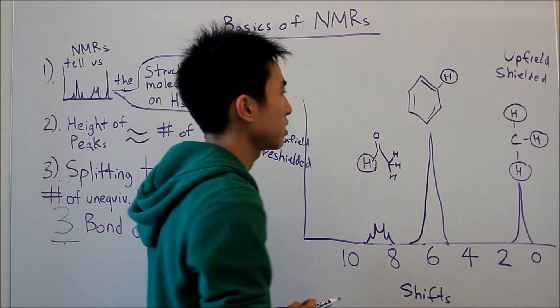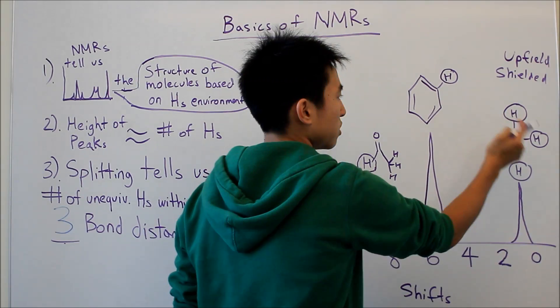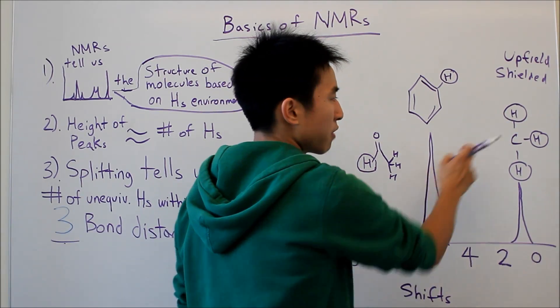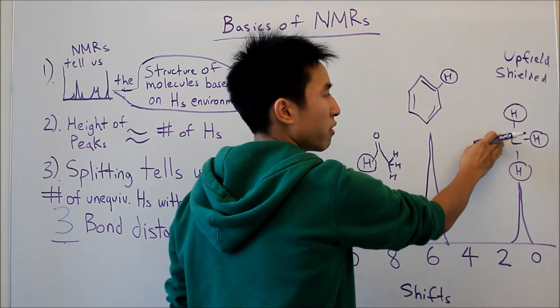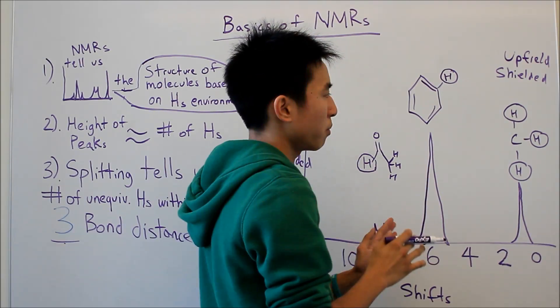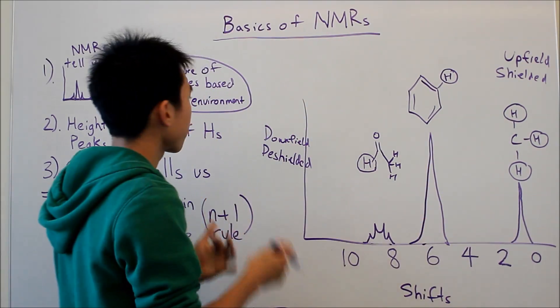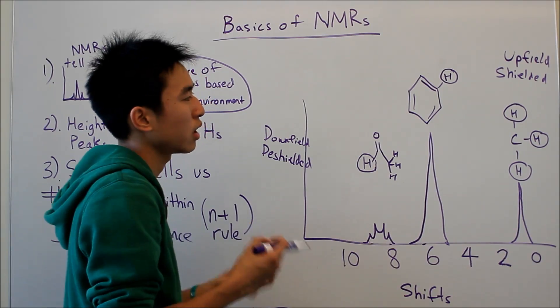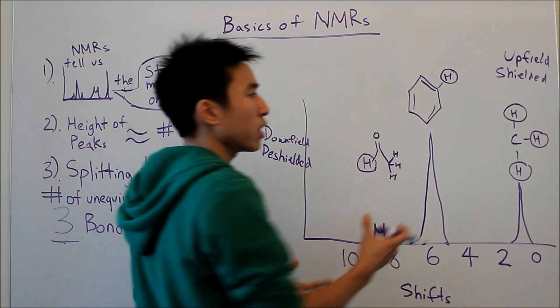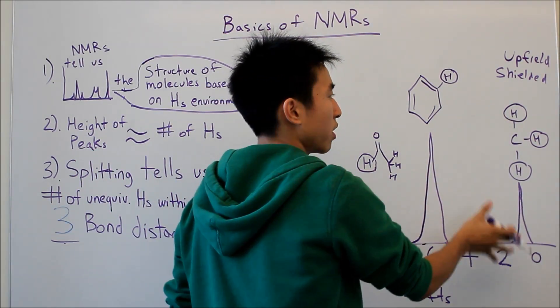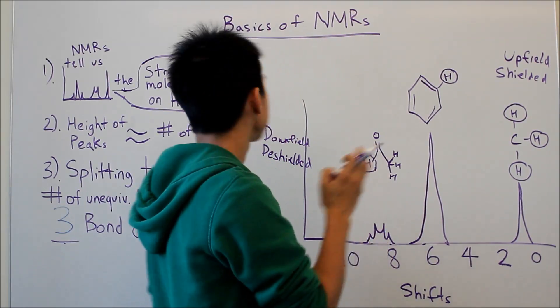And the last one is these three hydrogens here. They have carbon bonds in them, and for now I don't have anything else here, but they don't have any electron withdrawing sort of functional groups or anything in their environment, so that's why they're more upfield and shielded.